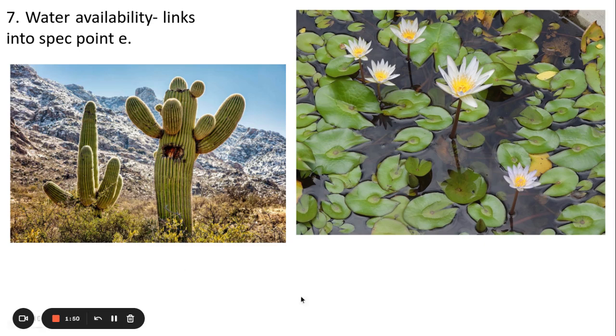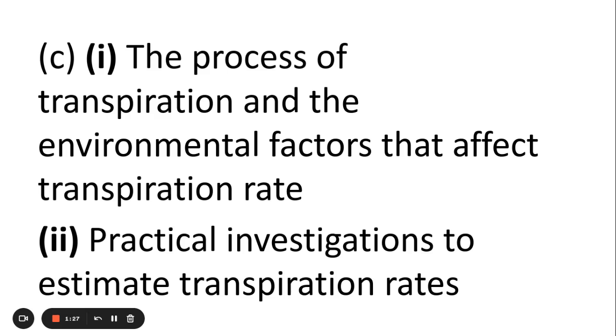The more water is available, such as in the water lily here, it doesn't really matter how much water the water lily loses through evaporation because it's readily available. But in the cactus, because there isn't as much water available, it will try to hold on to that as much as possible using different ways which we'll look at in spec point E. So those are the different ways in which transpiration can be impacted.